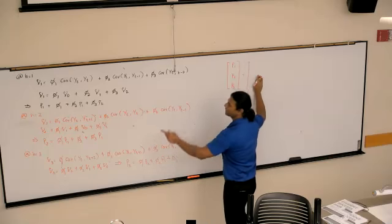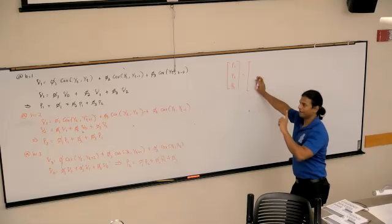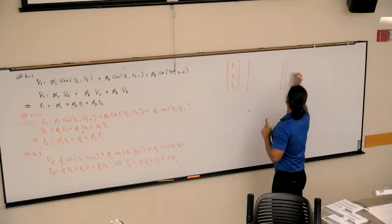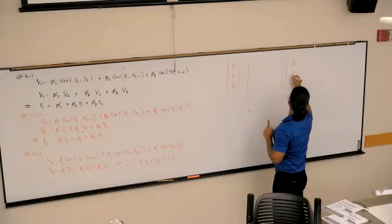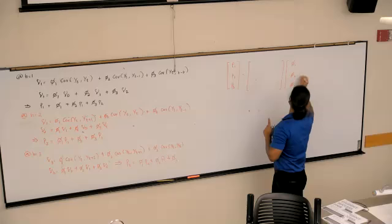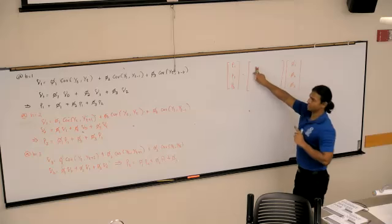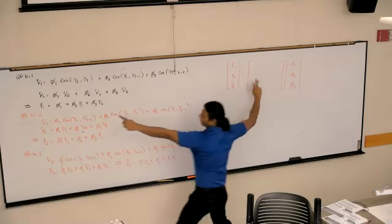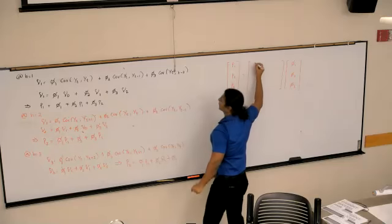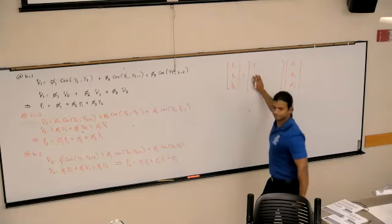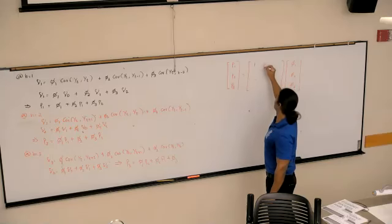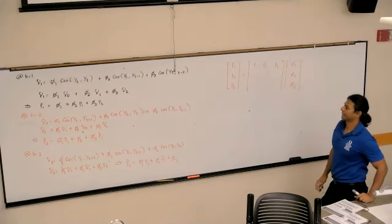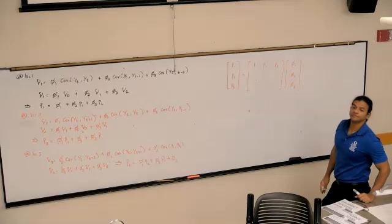Excuse me, left hand side. First equation, if I pull out the coefficients phi 1, phi 2, and phi 3, what should go here? I need to get phi 1, so it has to be 1, rho 1, rho 2.